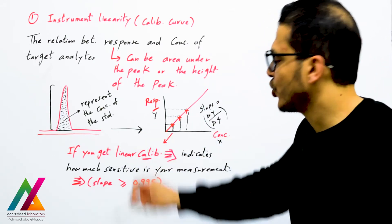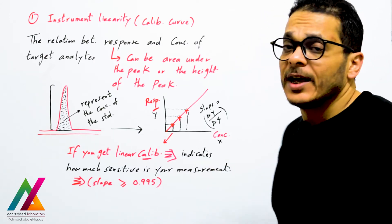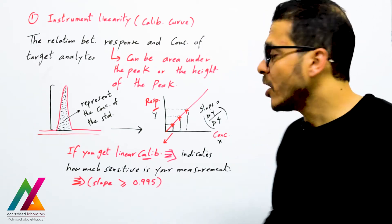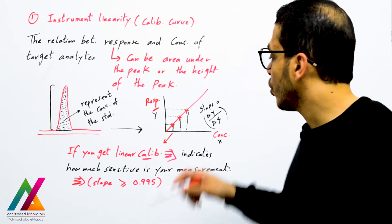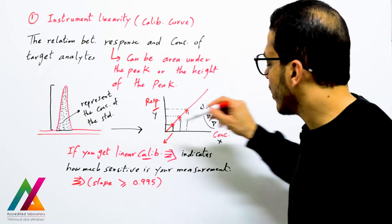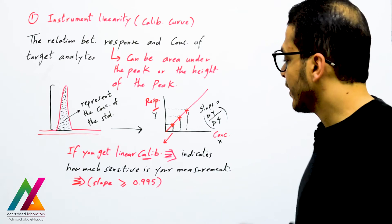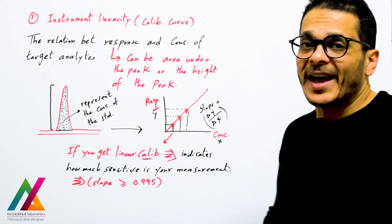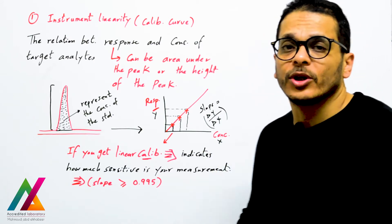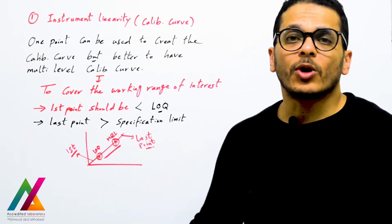All points should be on the line to get a linear calibration curve. A linear calibration curve indicates how sensitive your measurement is. If sensitivity is high, all points will be on the line and the slope — equal to Y divided by X — will be higher than or equal to 0.995. The calibration curve is accepted when the slope meets this criteria.